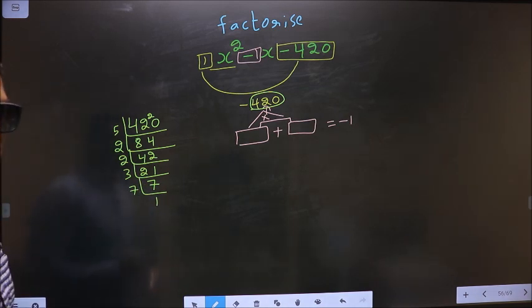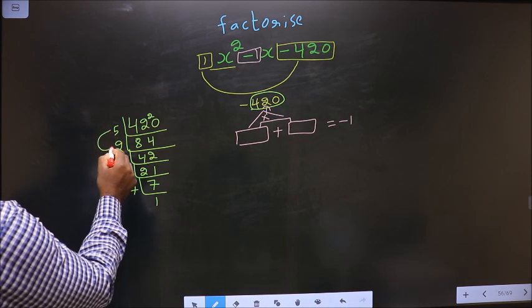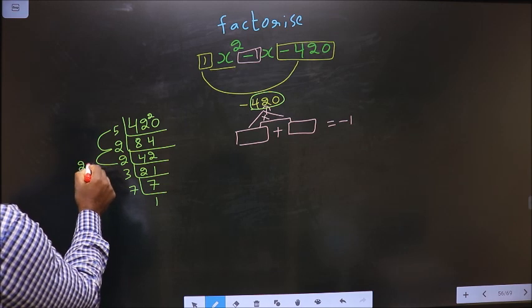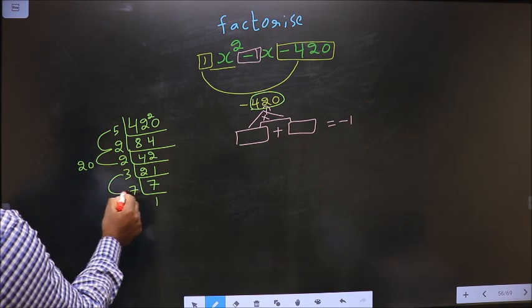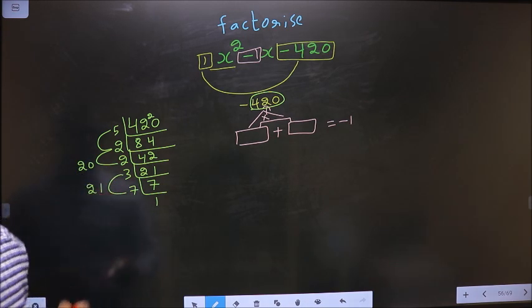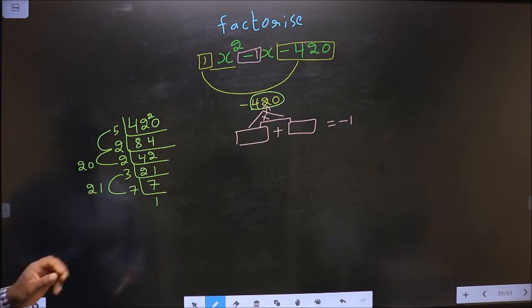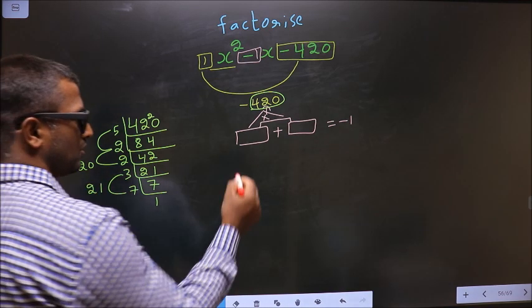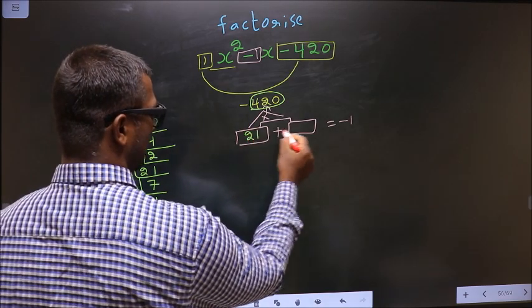Now the two numbers should be 5×2 is 10. 10×2 is 20. And the second number is 3×7 is 21. 21 - 20 is 1. 21×20 is 420. So here you write 21 and here 20.